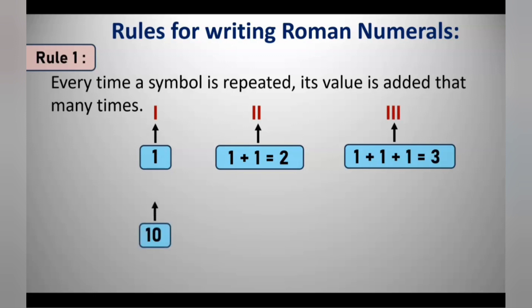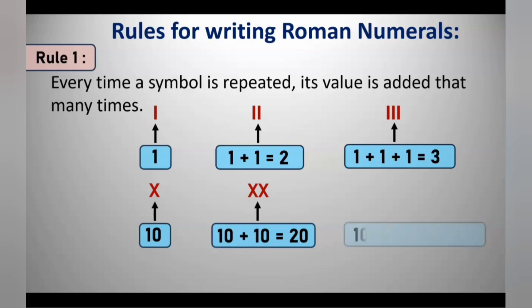Similarly, X is used to write 10. So 20, which is 10 plus 10, is written as XX. And to write 30, XXX — three times — is used.